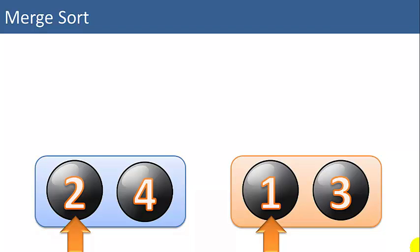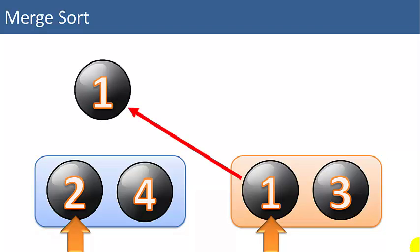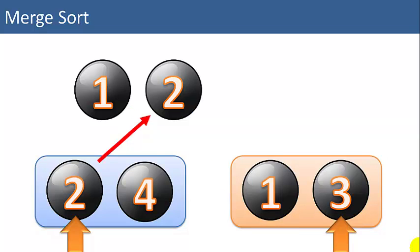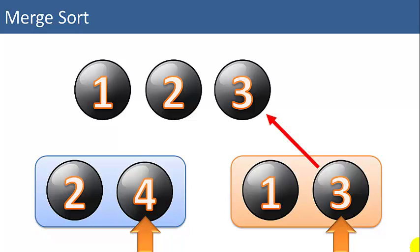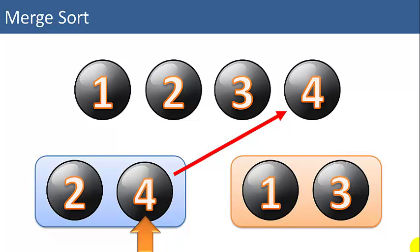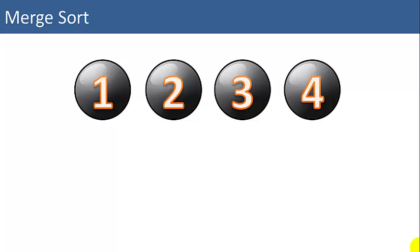So we compare 2 to 1. 1 is smaller, so we'll add 1 back to the main list first. Then we compare 2 to 3 — 2 is smaller, so we add 2 to the main list. We compare 3 to 4 — 3 is the smaller item, so we add 3 to the main list, and then we're done with the right list. Now all we have left is the left list — there's a 4 left, so we add that. Now we have a sorted list of 4 items.